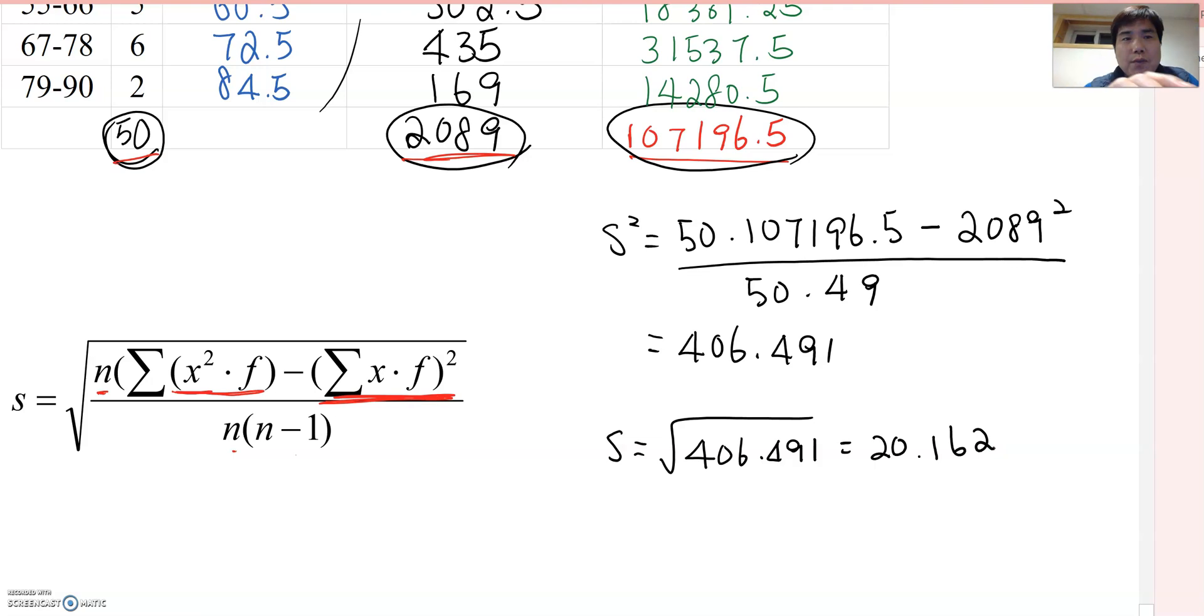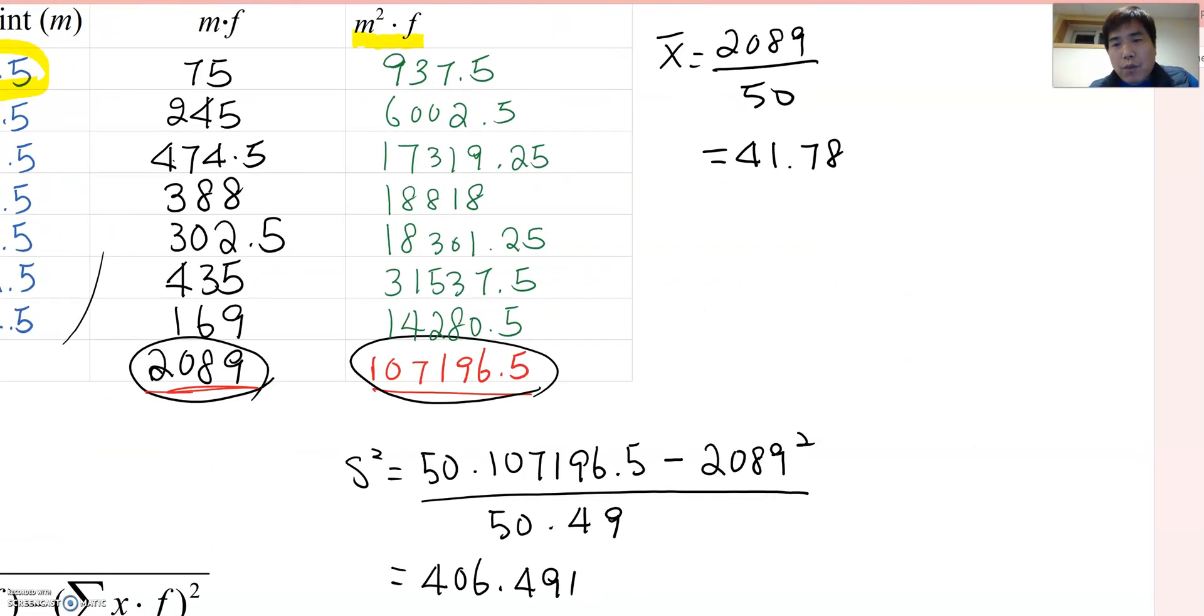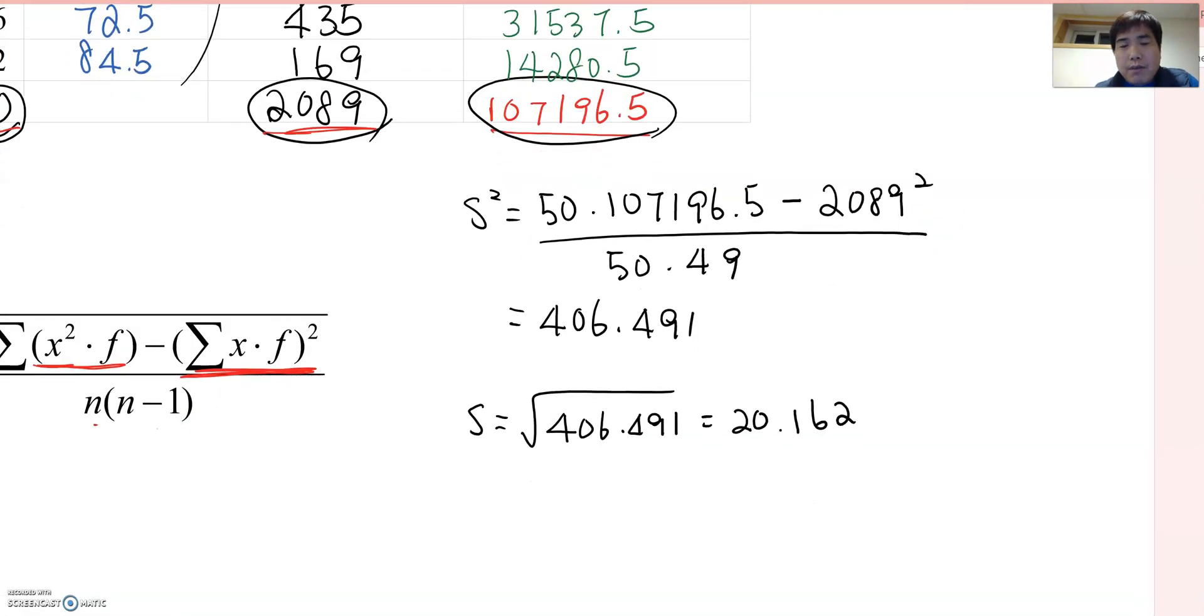So therefore, the answer for this question is sample mean 41.78, and sample variance 406.491, and sample standard deviation 20.162. That will be the answer for this problem.